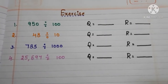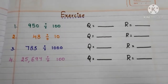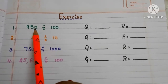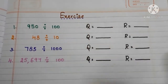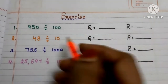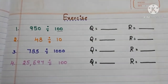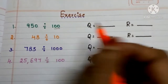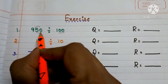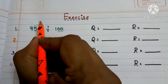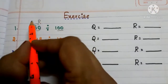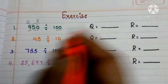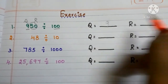Now let us do a small exercise. First one is 950 divided by 100. In 100, two zeros are there. So the last two digits become the remainder, which is 50. The remaining digits become the quotient, which is 9.